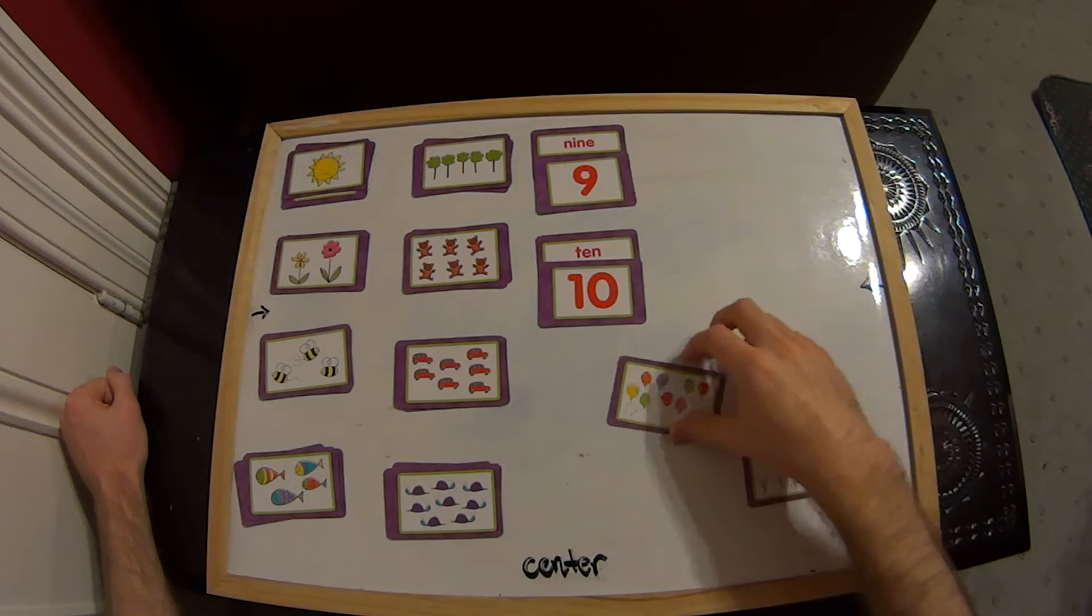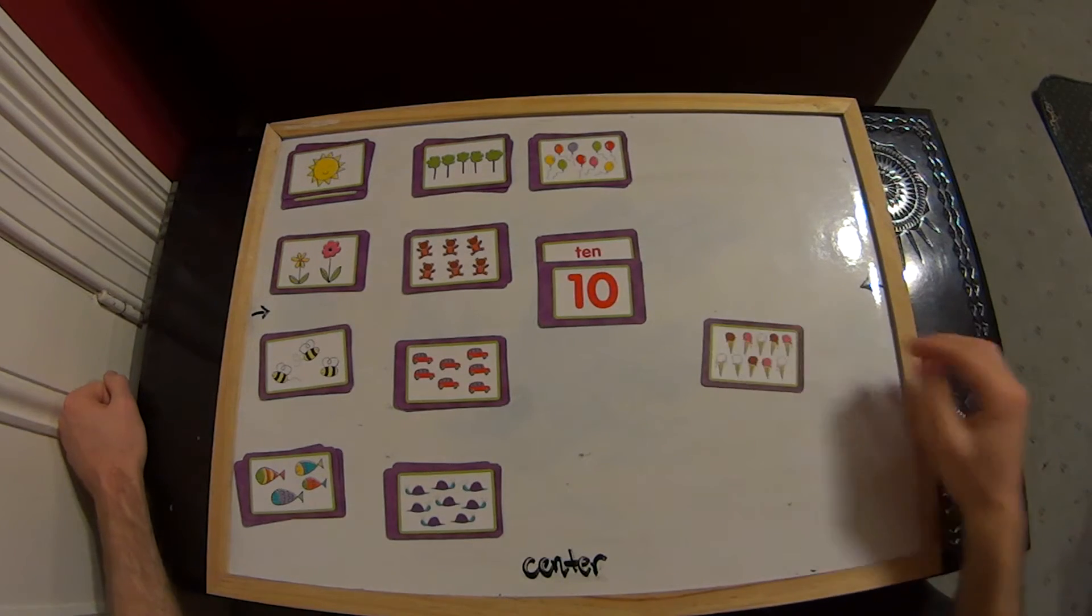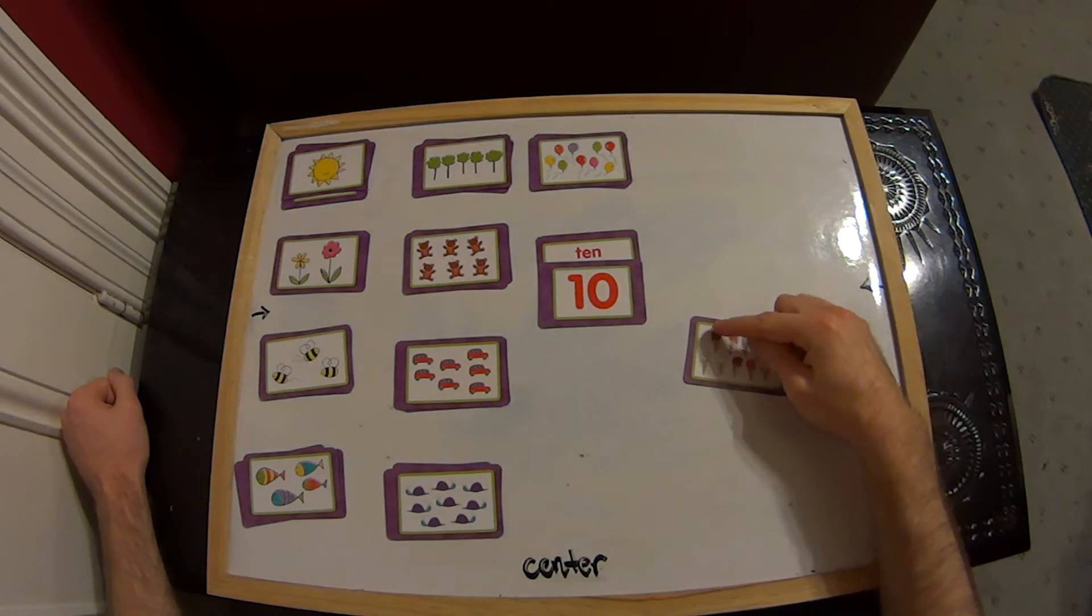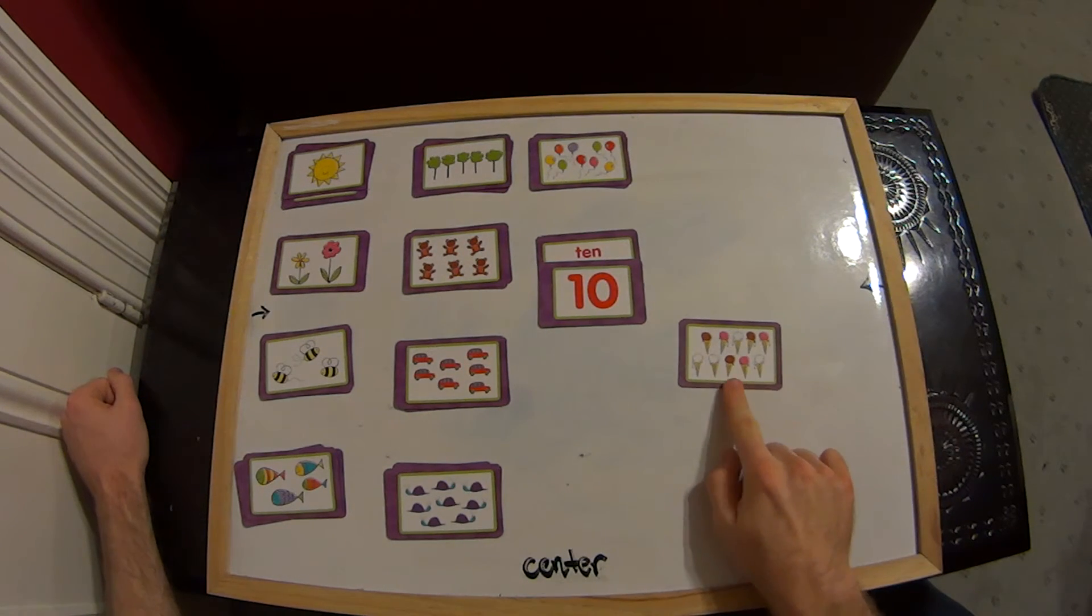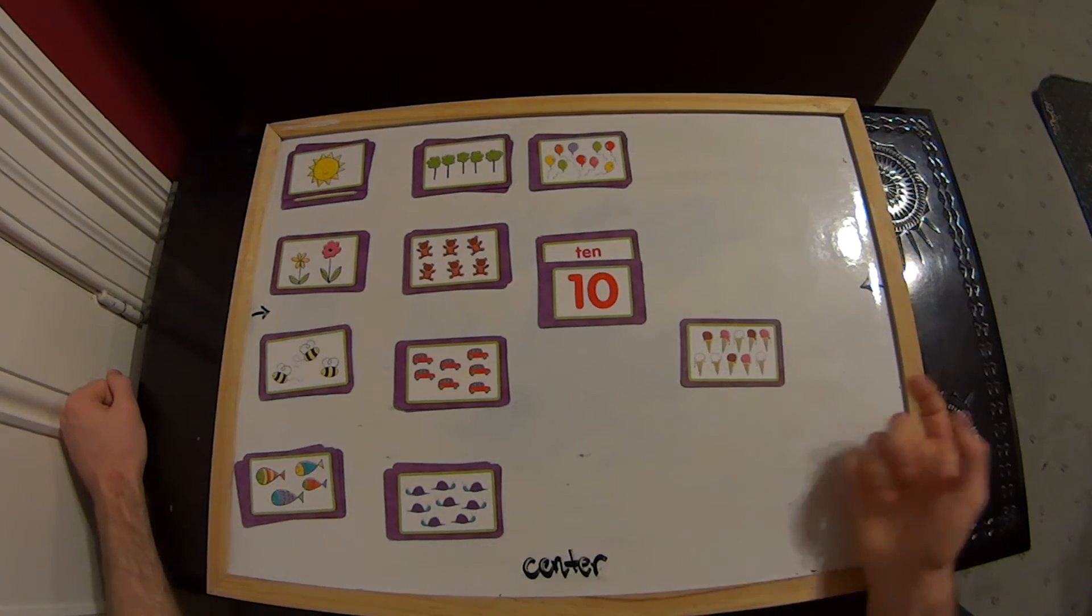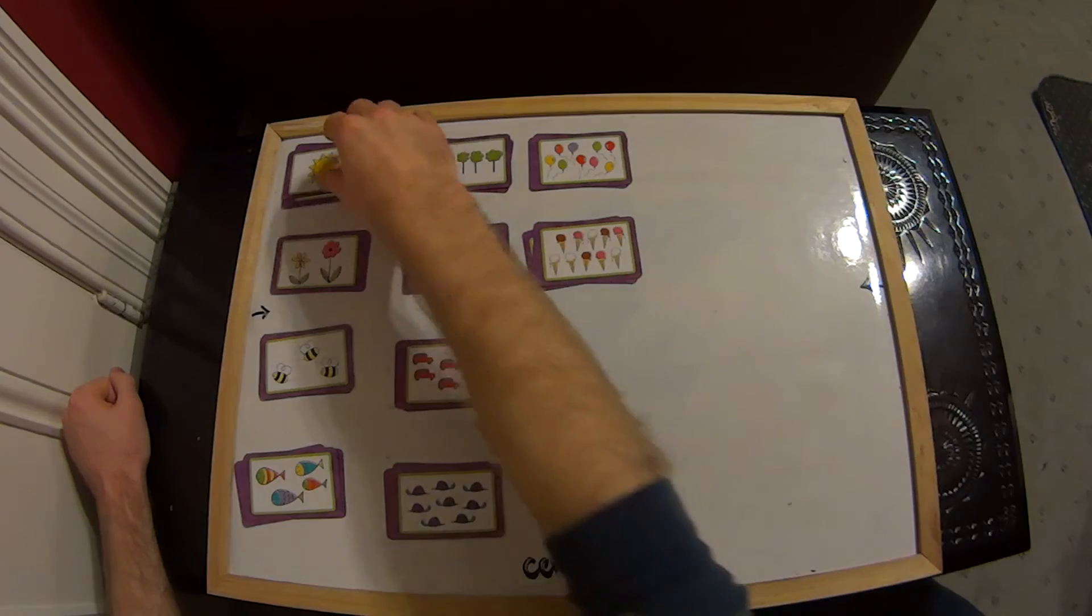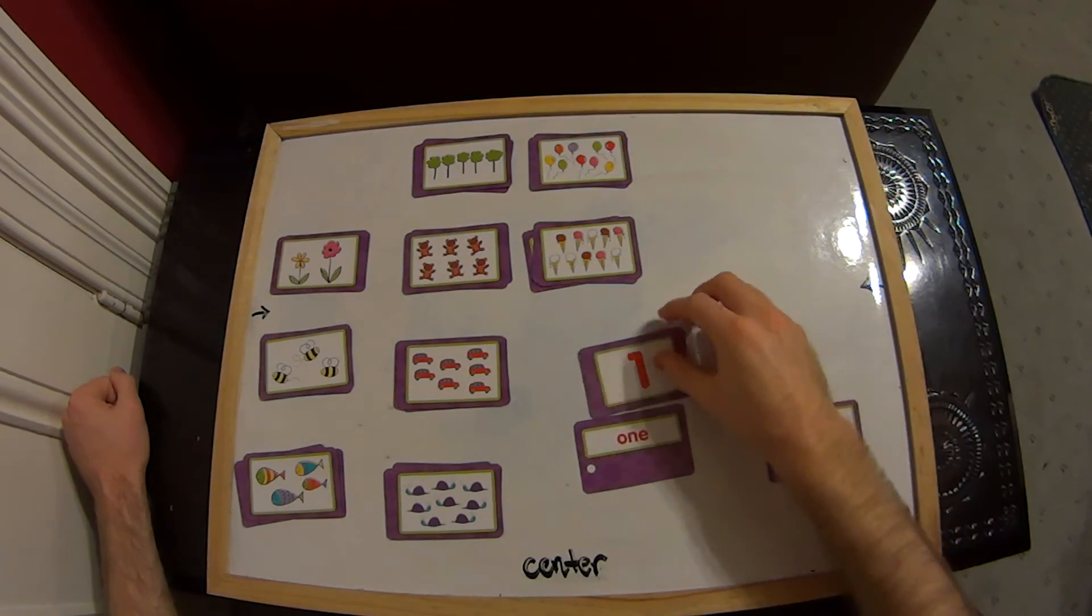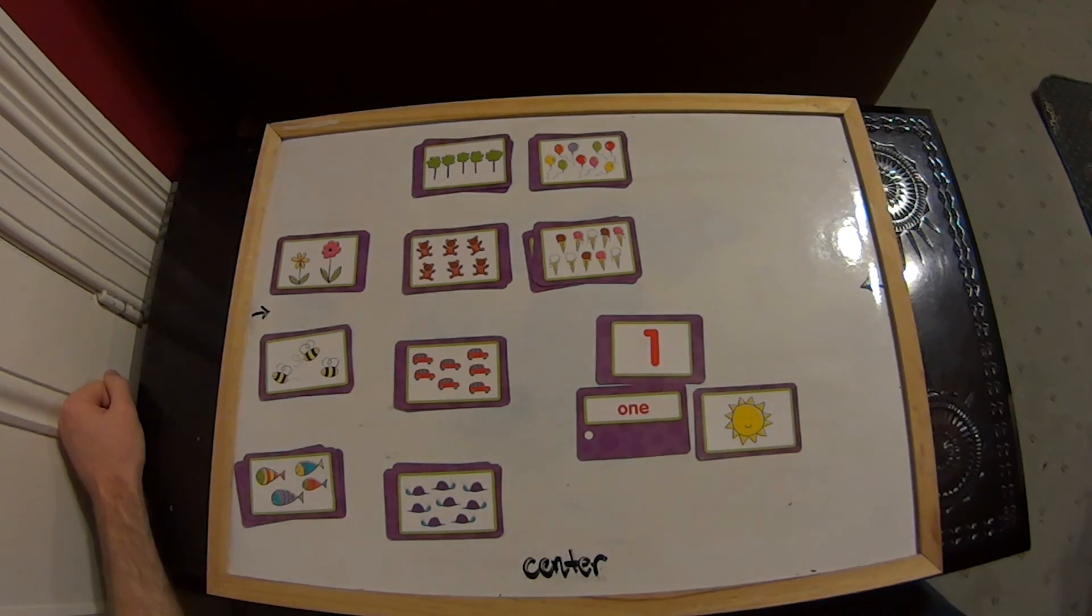And remember there's 9 balloons. So we can do that in one nice and quickly. And that just leaves 1 left. 10 ice cream cones. Let's check to make sure it's right. 1, 2, 3, 4, 5, 6, 7, 8, 9, 10. Beautiful. There we go. We've matched our symbols with our names with our objects. Good work.